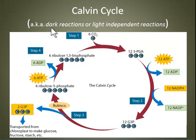The Calvin cycle is sometimes called the dark reactions or the light-independent reactions. This doesn't mean that they only happen in the dark — it simply means that they do not require light to occur. They often stop when it's dark though, because they rely on energy from the light-dependent reactions to power them. No light, no power.